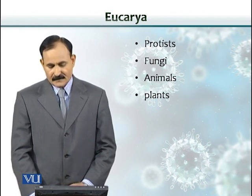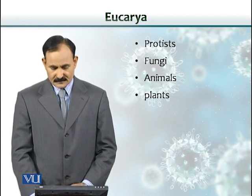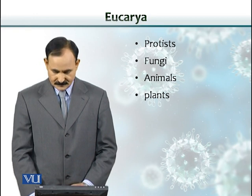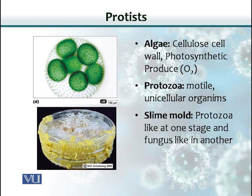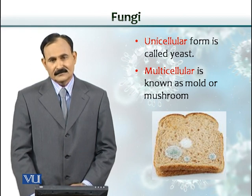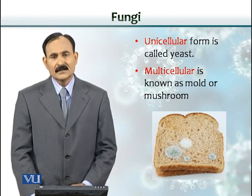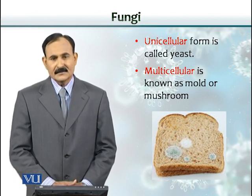Eukaryotes include protists, fungi, animals, and plants. Protists include algae, which have cellulose in their cell wall and are photosynthetic — they make oxygen. There are also protozoa, which are motile and unicellular organisms, and slime molds. Slime molds behave like protozoa at one stage of their life. Fungi can be unicellular, and when they are unicellular, we call them yeast.